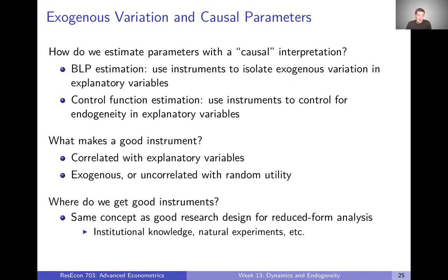Knowing things like institutional knowledge helps — is there some kind of natural experiment you could rely on? Are there exogenous policy shocks? On the product side, what could be possible exogenous things that would shift prices or costs of production? That might require digging into the details of specific industries you're interested in. I don't have a great answer for where we get good instruments because it's context specific. The only advice I can give is to really know your context and understand where some exogeneity might come from. I'm going to stop there on the overview and dive into BLP estimation in the next video.